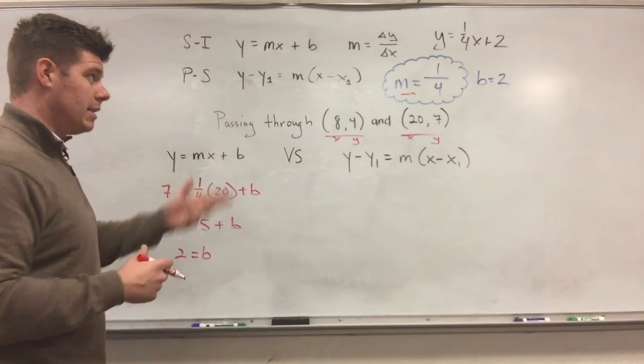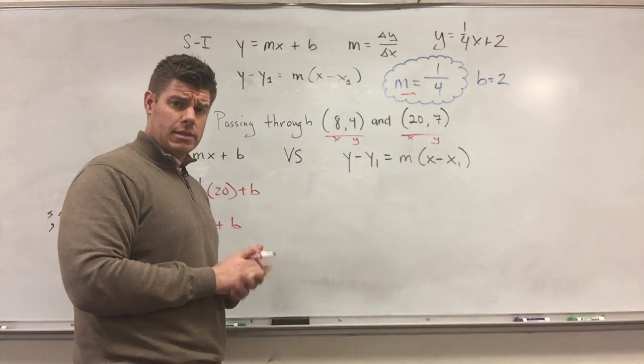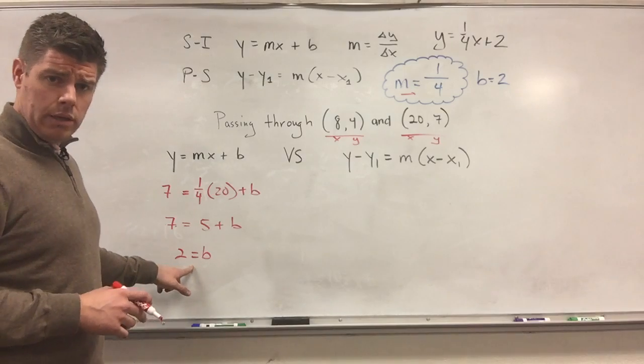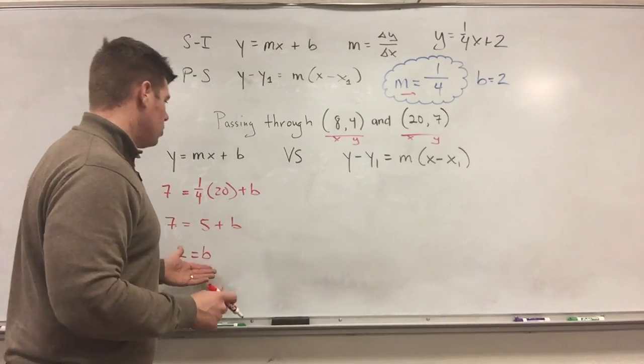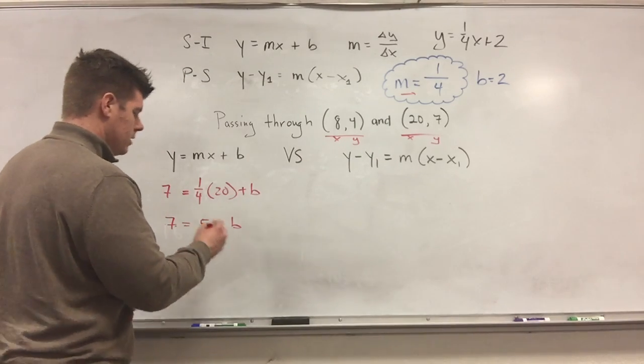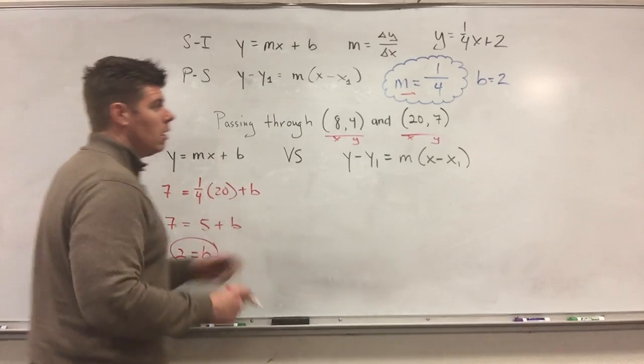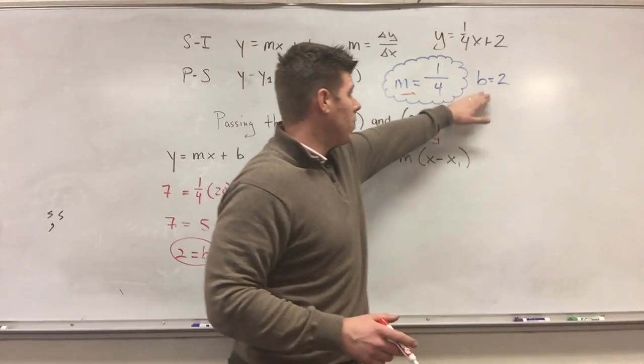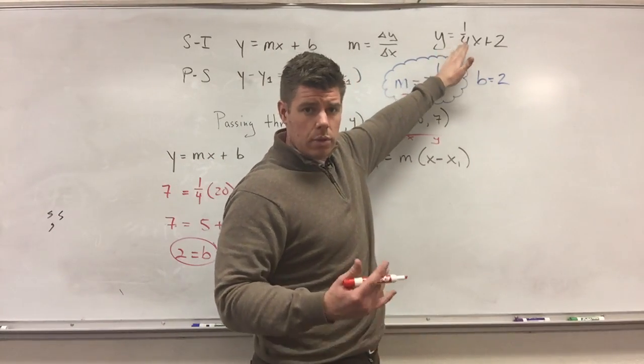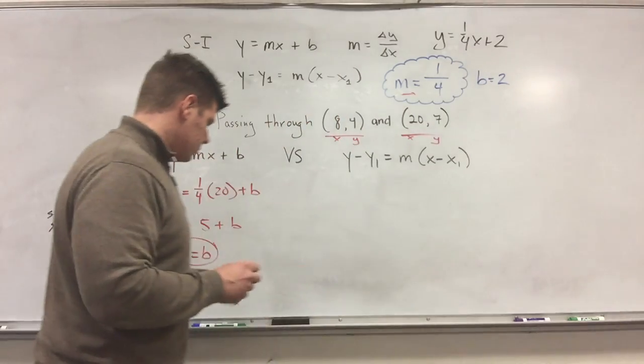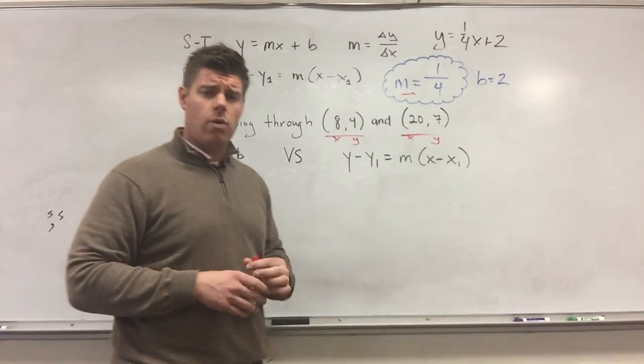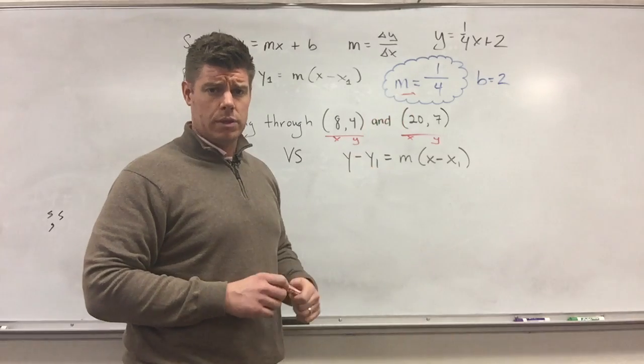And notice before that we ended up with 2, so this is just a way of calculating. So minus 5 from both sides. I get b is equivalent to 2. This is when x is 0, the y will be 2. So now I've got b. Now remember, you need to make the equation. So the important part is, we just calculated b. We have m, now we have b, so the equation is 1 fourth x plus 2.